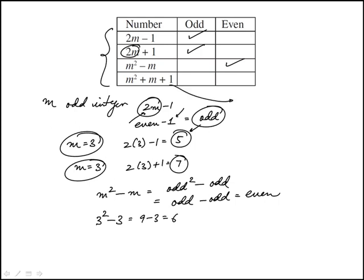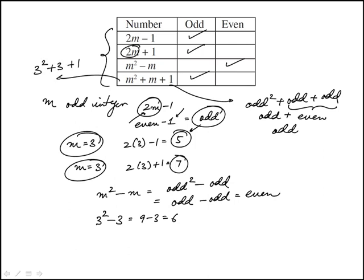And then finally that odd square plus odd plus 1, which is odd. Odd plus odd is even. Odd square is odd. And then again, odd plus even is odd. So here again, if we do m is 3, this would be 12 plus 1 is 13, odd.